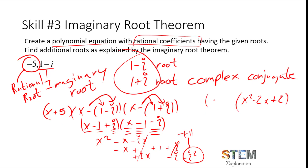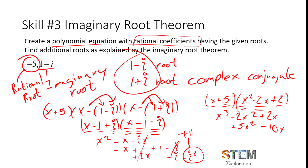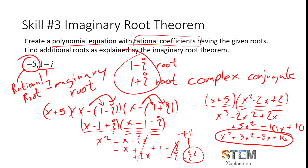Now take x plus 5 and multiply it by x squared minus 2x plus 2. Going through: x times x squared gives x cubed, then negative 2x squared plus 2x. Then 5 times x squared gives plus 5x squared, minus 10x, plus 10. Combining like terms: x cubed plus 3x squared minus 8x plus 10. That is the polynomial equation based on the two imaginary roots plus the root of negative 5. If you graph this, you would see it crosses the x-axis at negative 5 and doesn't touch anywhere else.